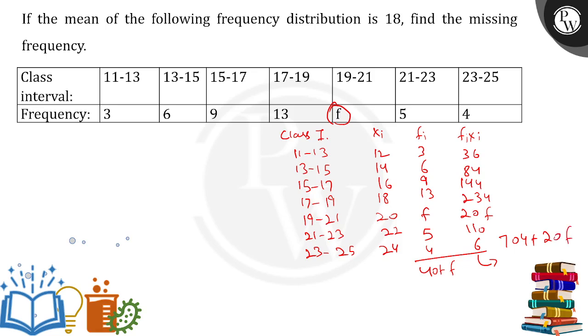Once we have all this, now we can apply the mean formula. The mean formula which we know is simply summation fi xi upon summation of fi. Mean is given to me as 18. Put up the values which we have, that is 704 plus 20f divided by 40 plus f.